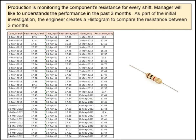Let us take an example. Production is monitoring the component's resistance for every shift. Manager would like to understand the performance in the past 3 months. As part of the initial investigation, the engineer creates a histogram to compare the resistance between 3 months.